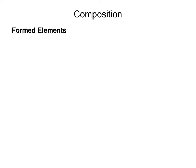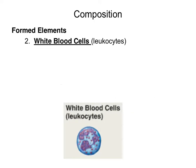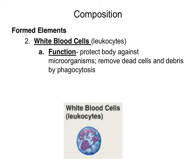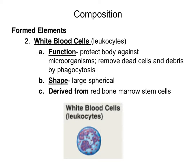The second formed element is a white blood cell, or leukocyte. The function of a white blood cell is to protect the body against microorganisms, and also to remove dead cells and debris through a process known as phagocytosis. White blood cells can also be found within the lymphatic system as part of immunity against foreign invaders and pathogens. White blood cells are large spherical structures, larger than a red blood cell, and they too are derived from red bone marrow stem cells.